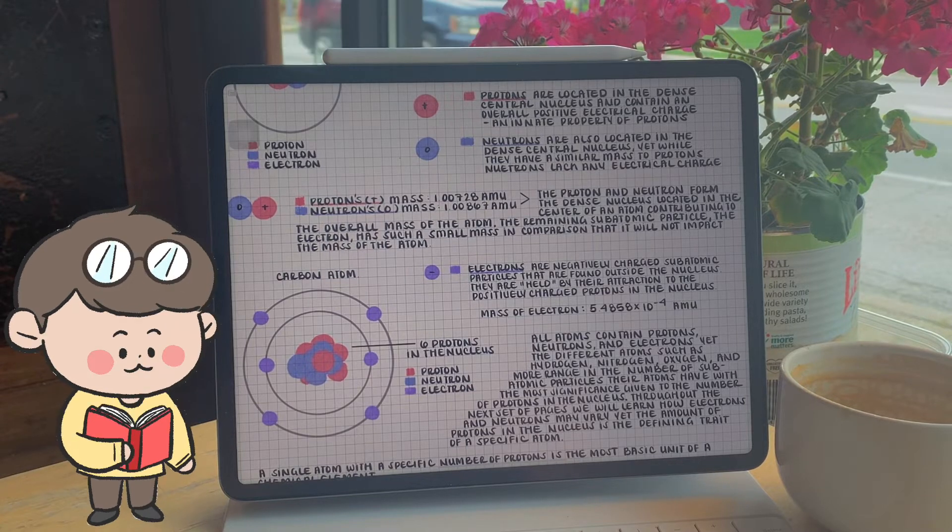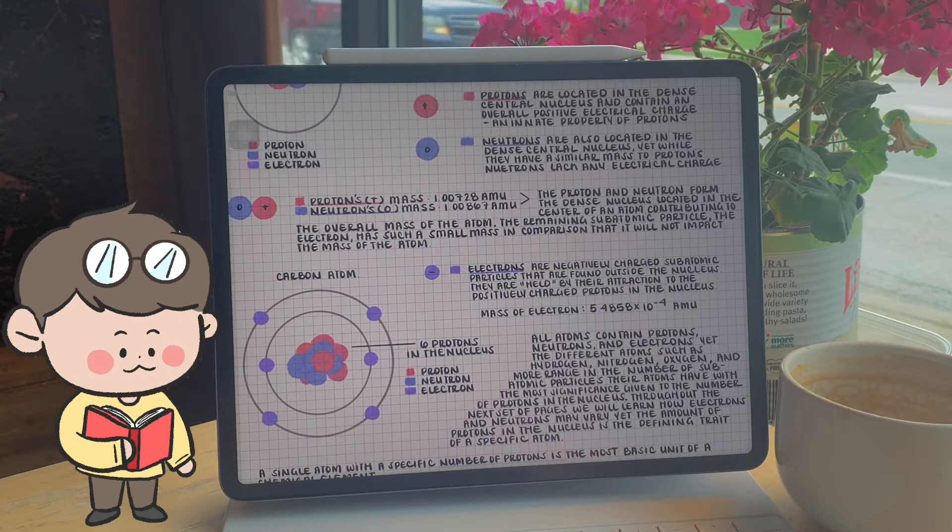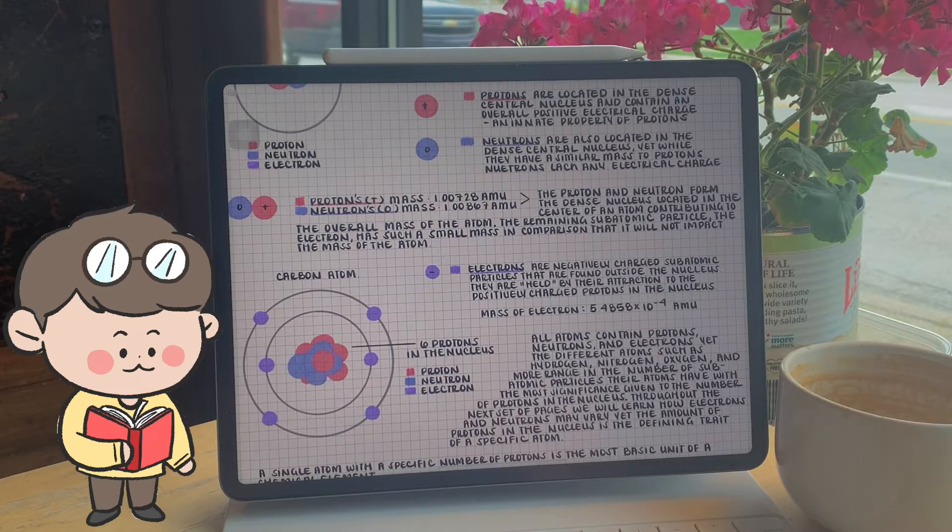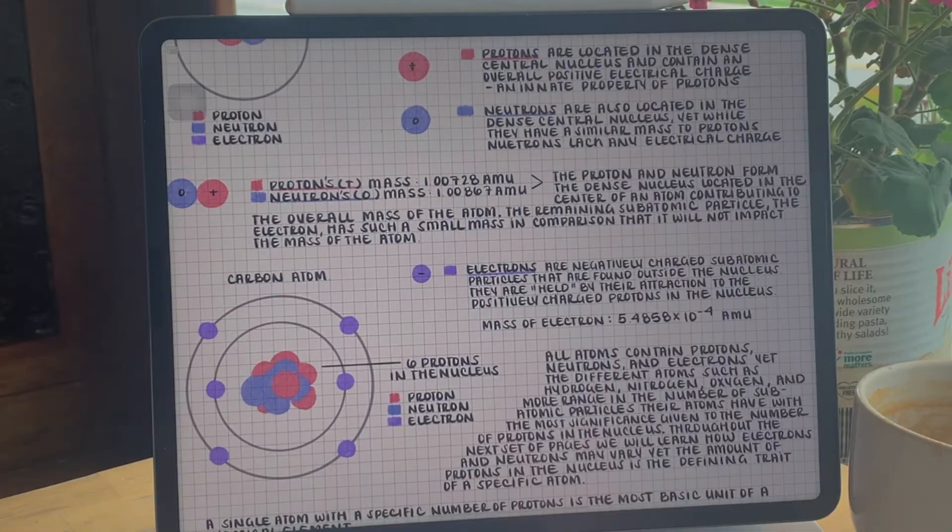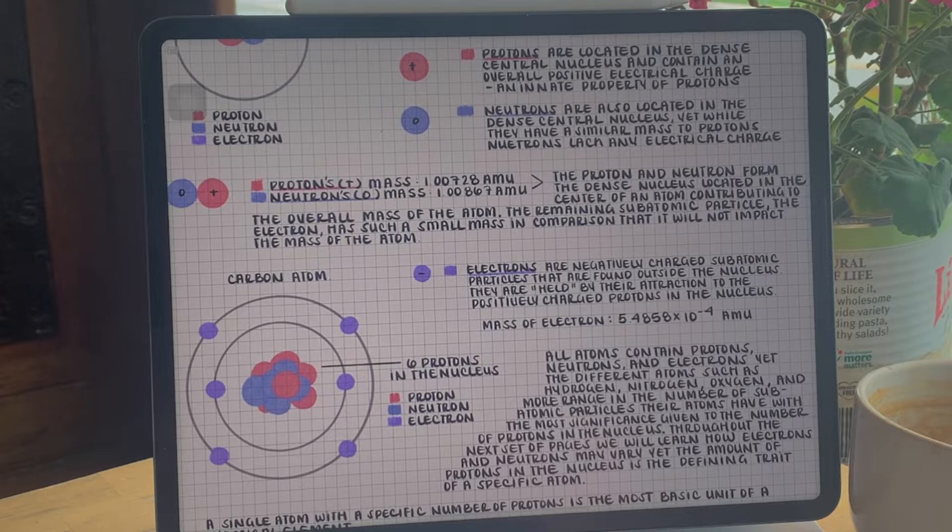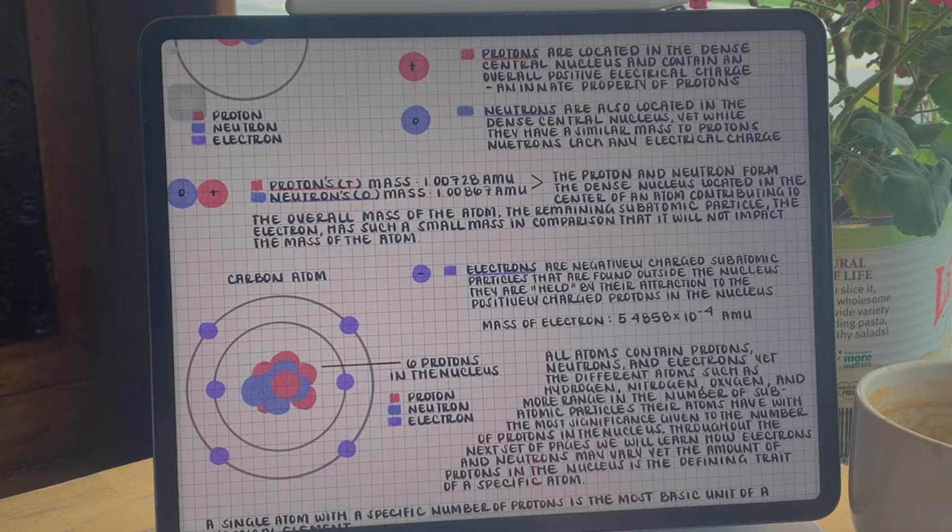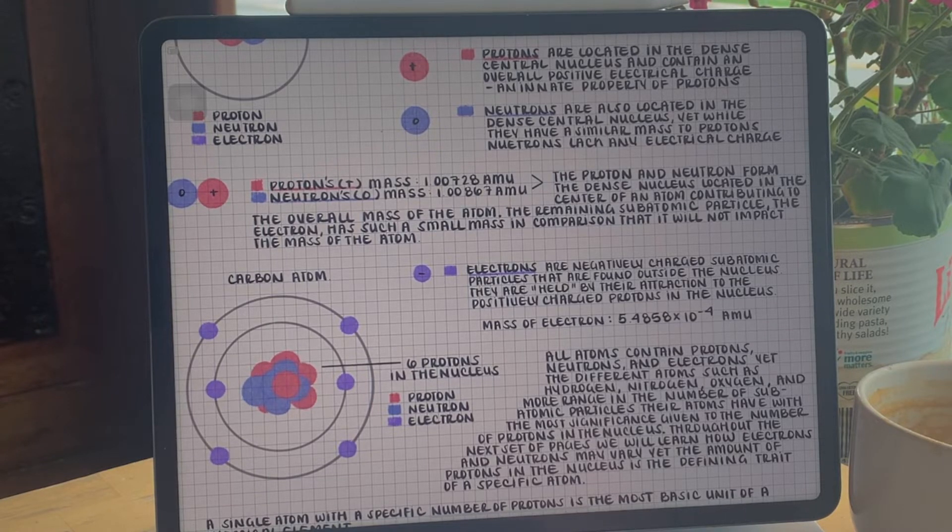The remaining subatomic particle, the electron, has such a small mass in comparison that it doesn't really impact the overall weight. Electrons are negatively charged subatomic particles. They are found outside of the nucleus and are held within the atom by their attraction to the protons in the nucleus.